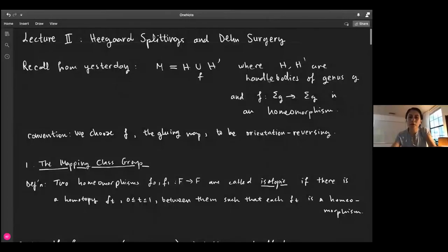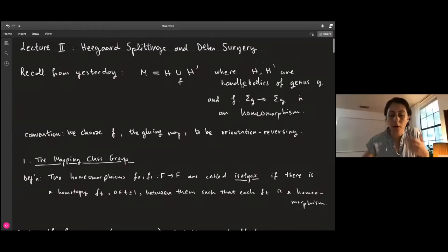Today is lecture two of the mini course on Heegaard splitting and Dehn surgery. I will briefly talk about the mapping class group, and with its help we will determine which three-manifolds have Heegaard genus 0 and 1. That's basically the aim of this lecture today.